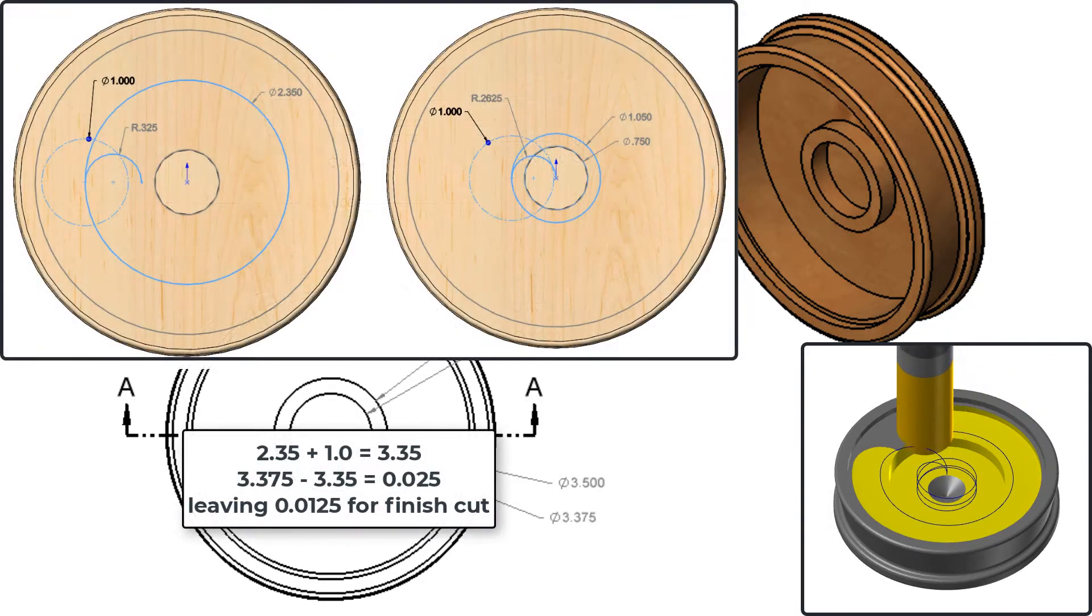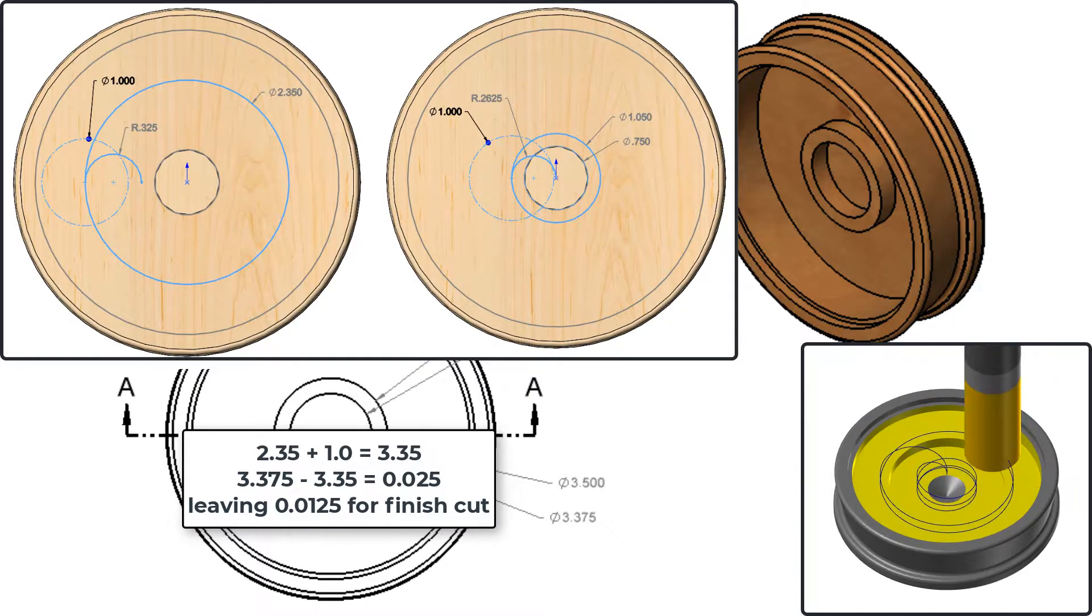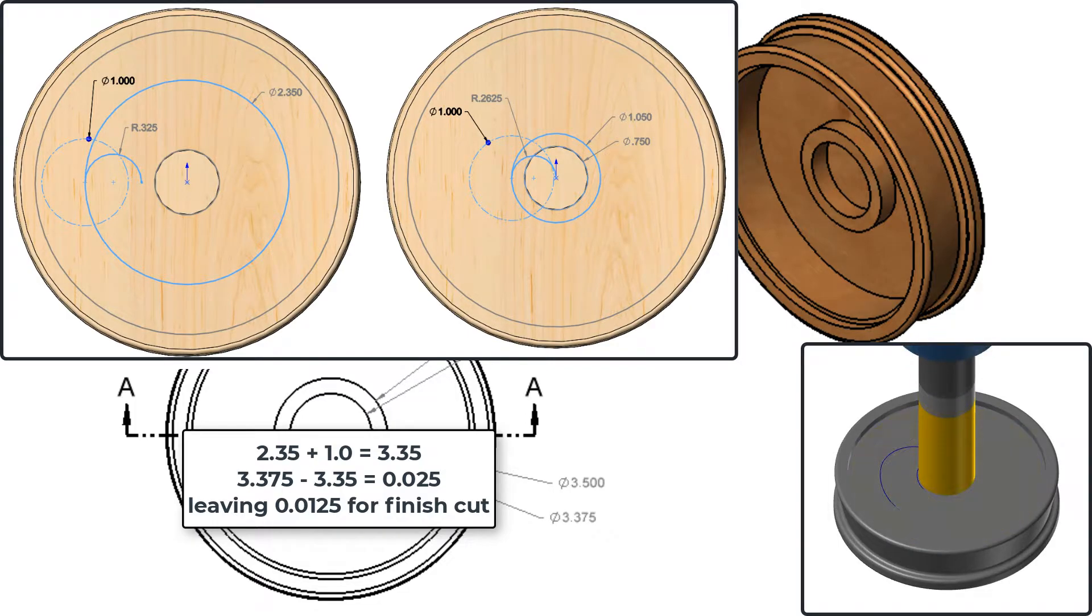For this part the same two roughing passes which were used to circle mill the top 3.5 inch pocket will be used to helical mill the roughing of this pocket. This will leave a full circle milling pass of 12.5 thou to be programmed after all the roughing is completed.